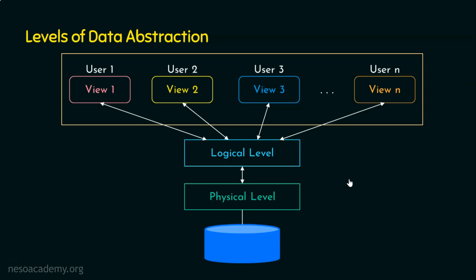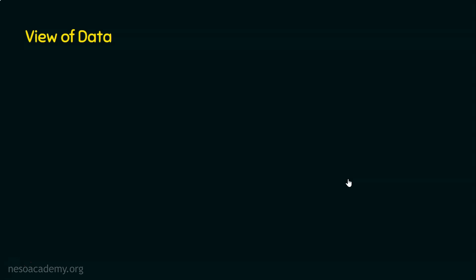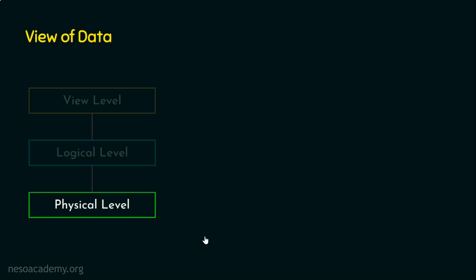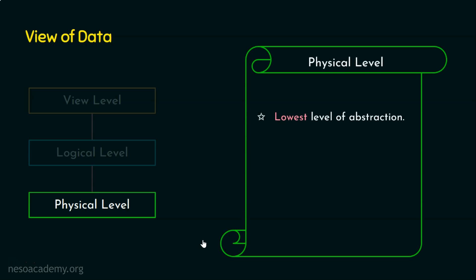The topic now is the various views of data, and there are three levels: the top level is the view level, followed by the middle level — the logical level — followed by the bottom-most level — the physical level. The physical level is the lowest level of abstraction. It is actually the database level where physical storage is involved. Databases are stored in physical media such as hard disks or SSDs, and that's why it is the lowest level of abstraction.